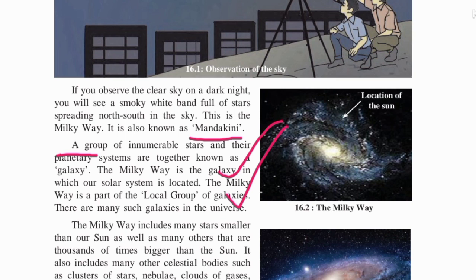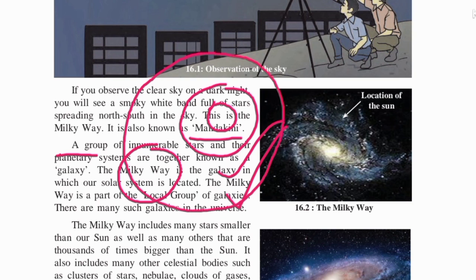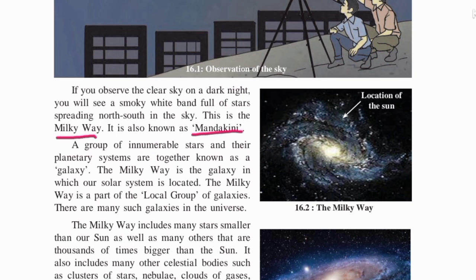Our planet is Earth. Earth, along with many other planets, revolves around the sun. The sun and all the planets that revolve around it form our solar system. When many such solar systems come together, they form a galaxy. The name of our galaxy is the Milky Way, also called Mandakini, and it has a spiral shape.